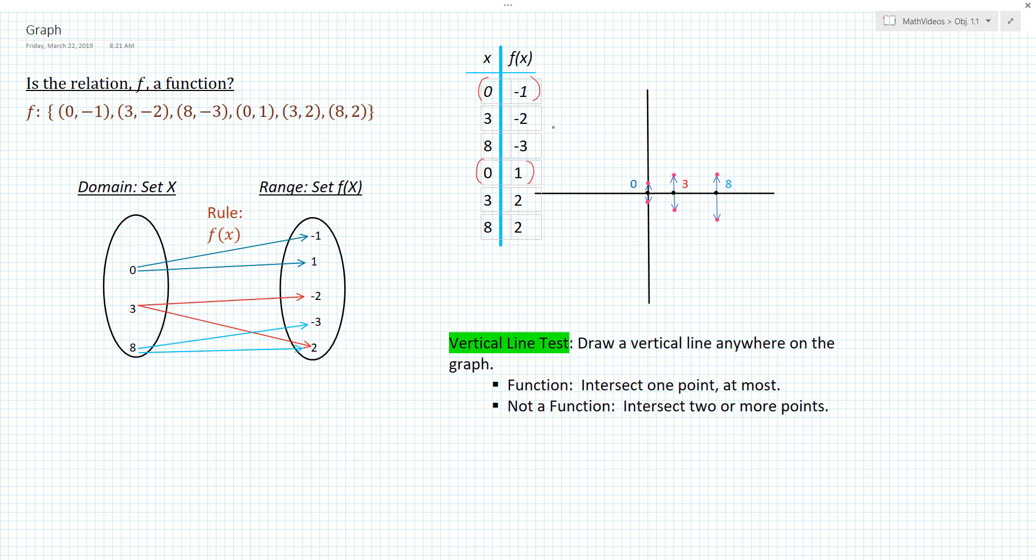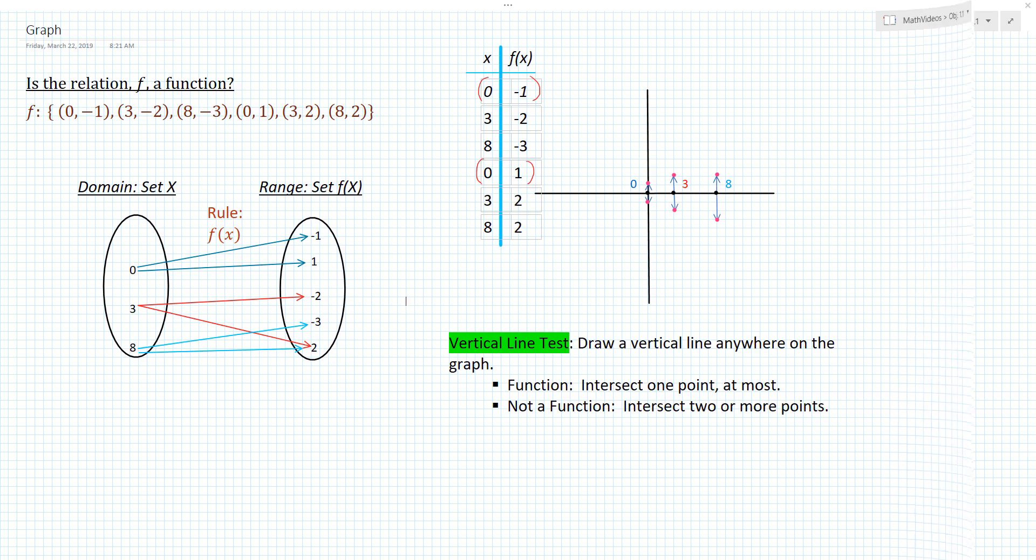And so we could see that we have the point 0, negative 1. So we stay here at 0 and then go down 1. The point 3, negative 2, we go right 3, down 2. The point 8, negative 3, we go right 8, down 3. The point 0, 1, we stay here at 0 and then go up to 1. The point 3, 2, go right 3, up 2. The point 8, 2, we go right 8, up 2. So that's plotting all of those points.